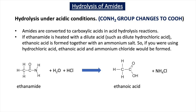Another reaction is hydrolysis, where bonds are broken by the action of water. Hydrolysis can occur in acidic or alkaline conditions. Heating an amide with dilute acid gives a carboxylic acid — this is acid hydrolysis. For example, heating ethanamide with dilute hydrochloric acid gives ethanoic acid and an ammonium salt. The equation: ethanamide reacts with H2O and HCl to give ethanoic acid and ammonium chloride.